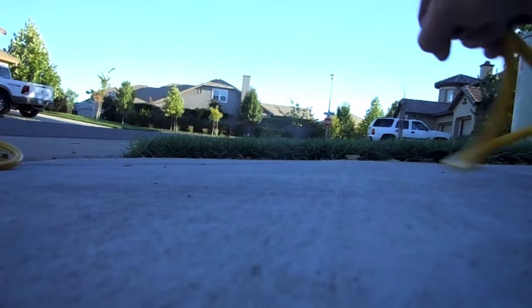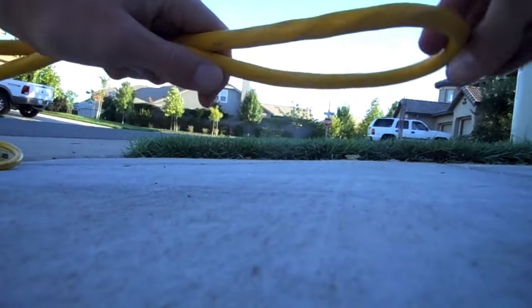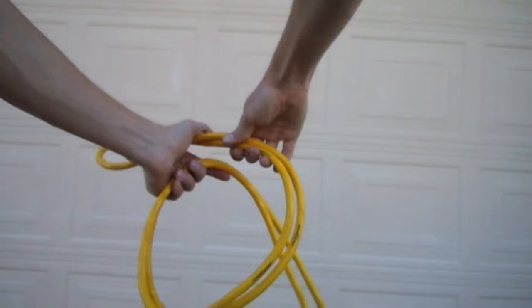Once you reach the end, grasp it about a foot from the end, forming a hoop. Grab the doubled cable about one and a half feet down and match it with the neck of the hoop to form a coil.